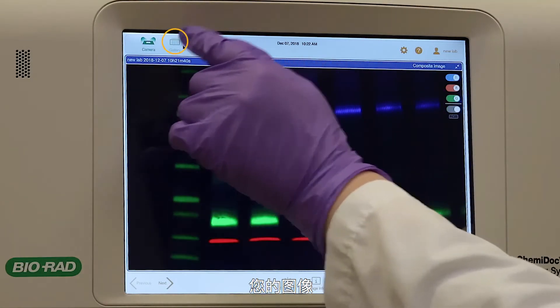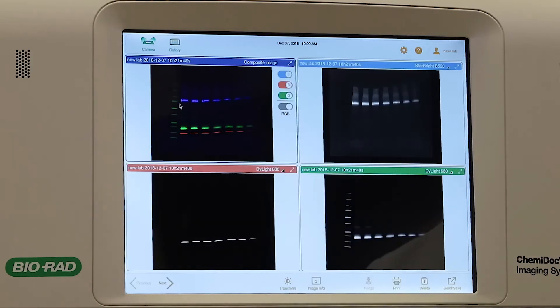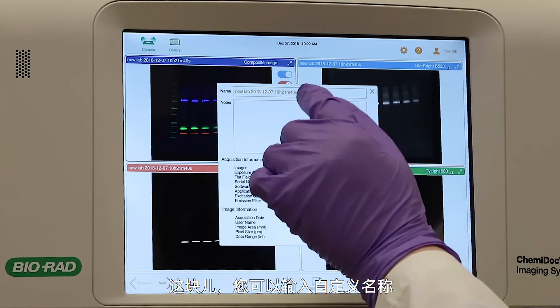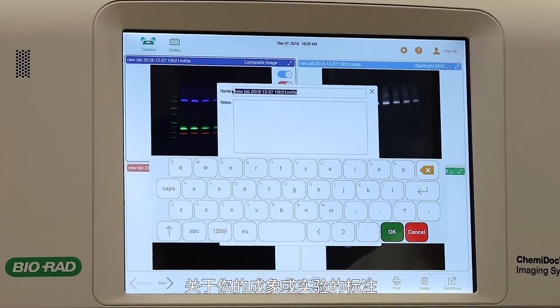Your images will be automatically saved and exported to the gallery. Tap the Image Info icon. Here you can enter a custom name and any notes you'd like to include about your image or experiment.